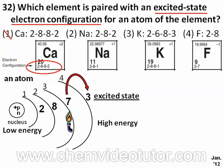Therefore, choice one is incorrect. Choice two is incorrect because 2-8-1 is the ground state for Na.